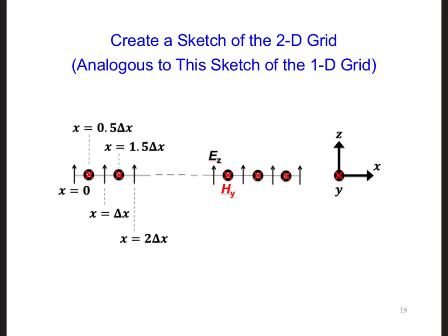So now see if you can create a diagram of the two-dimensional grid that includes the positions of Ex, Ez, and Hy field components, and their orientation. Your sketch should be analogous to the sketch shown here of the Ez and Hy components that we made in our one-dimensional FDTD model. Keep in mind that in order to solve the partial derivatives in Ampere's and Faraday's laws, we will need alternating electric and magnetic field components in both the x and z directions.